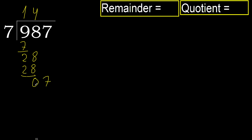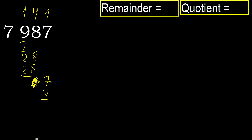Next. Eliminate 0. Bring down 7. 7 multiplied by 1 is 7. It is not greater. Subtract. Next: there is no more number, therefore finish it.